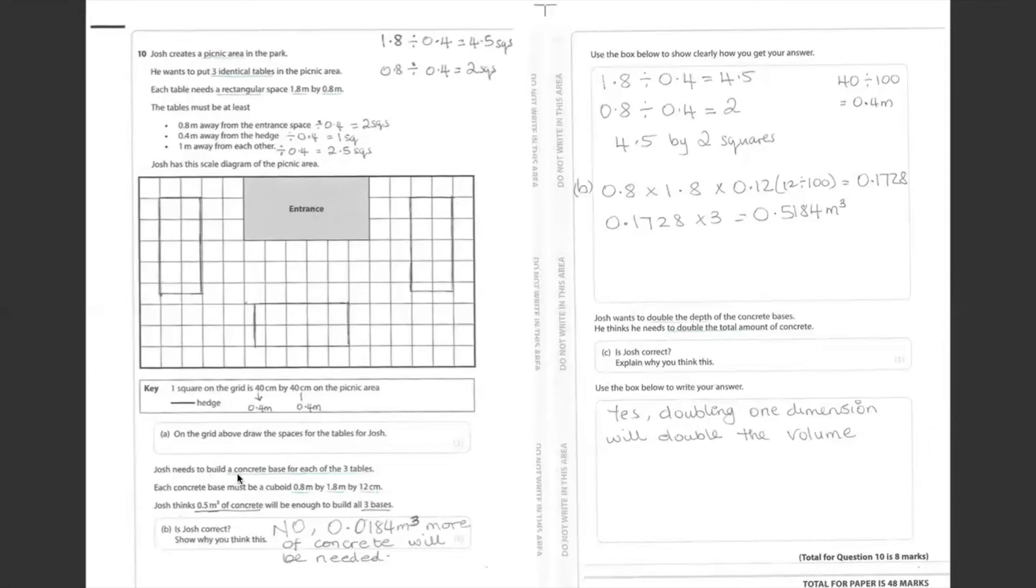Now, Joe needs to build a concrete base for each of the three tables. Each concrete base must be a cuboid 0.8 meters by 1.8 meters by 12 centimeters. So we need to convert the centimeters to be the same unit as the meters. And Josh thinks 0.5 cubic meters of concrete will be enough to build all three bases. So we now need to do 0.8 times 1.8 times 0.12 equals 0.1728.